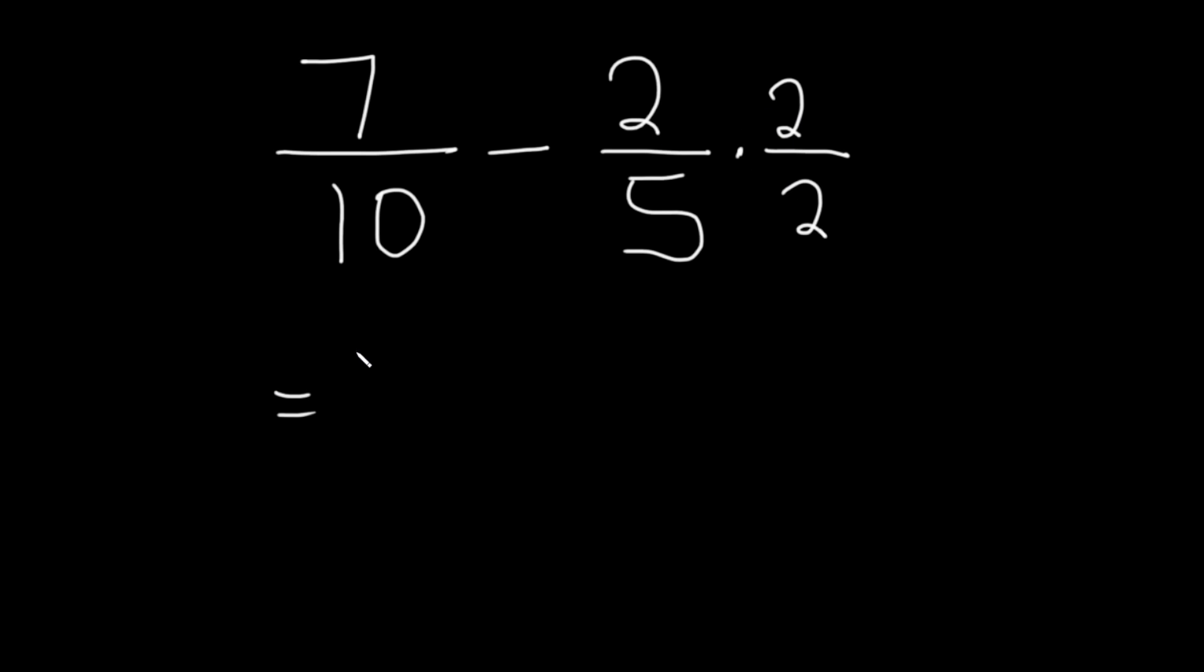So this is 7 over 10 minus, and then 2 times 2 is 4, that goes in the numerator, and 2 times 5 is 10, that's the denominator.